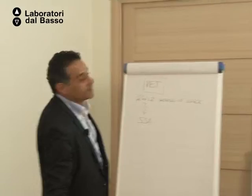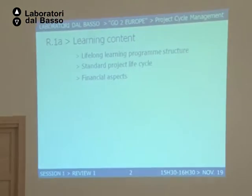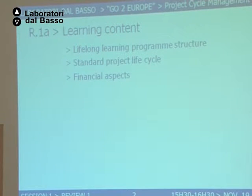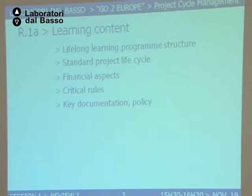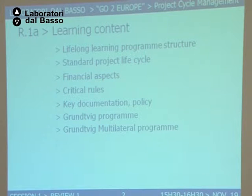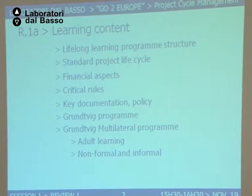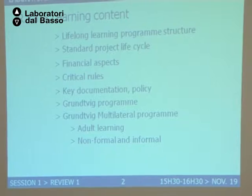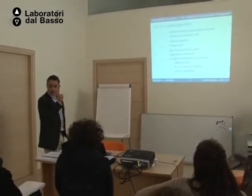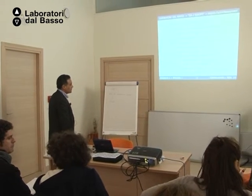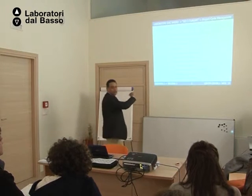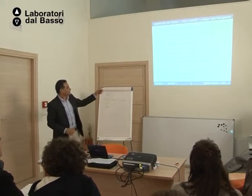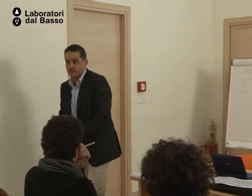What else did we learn? Financial aspects — contract agreement, rules of payments, 75% maximum grant. We learned the critical rules, key documentation policies. The Grundvig program, the multilateral program — adult learning, non-formal, informal. One of the first main objectives of the GMP and the second major objective of GMP — adult learning, non-formal, informal are the context, and the aging population and learning pathways are the specific objectives of the Grundvig multilateral program for this year.